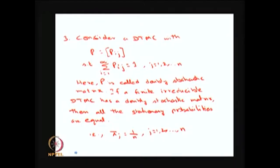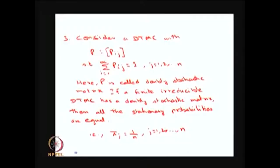In this situation, this stochastic matrix is called a doubly stochastic matrix — meaning each entry lies between zero and one, the row sums equal one, and the column sums also equal one. If you have a discrete time Markov chain with a finite doubly stochastic matrix that is also irreducible, that is the additional condition.